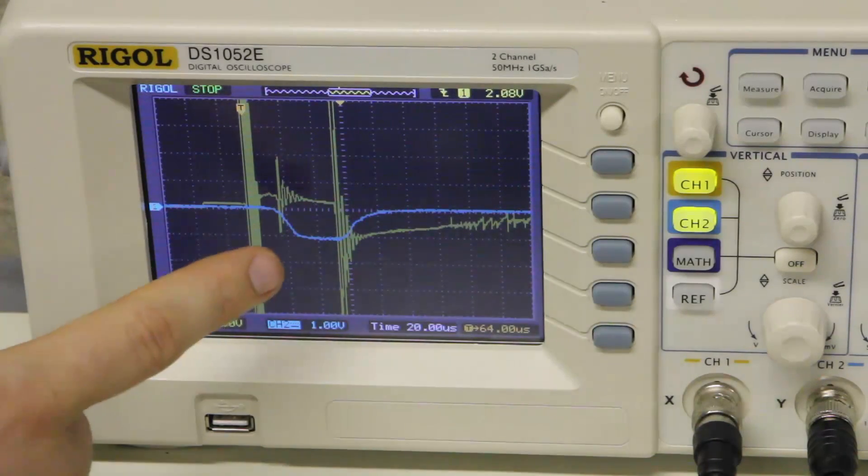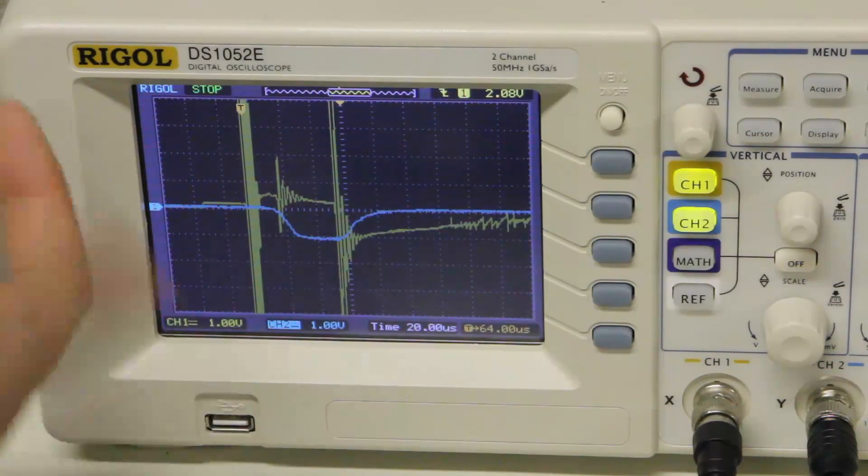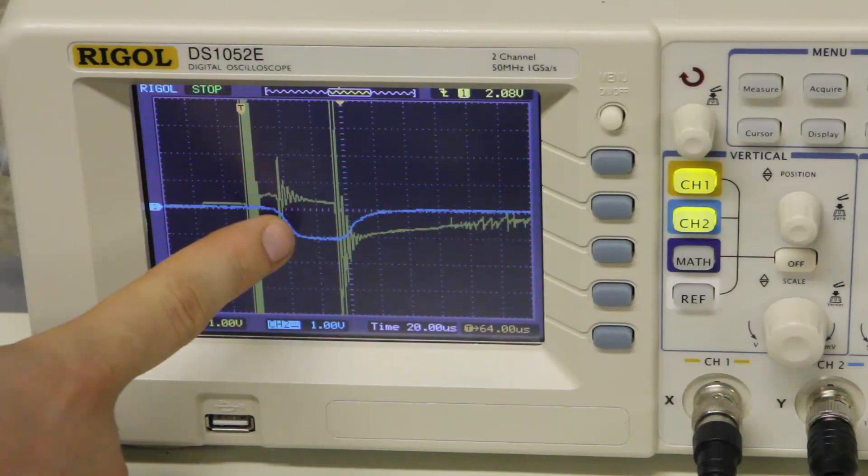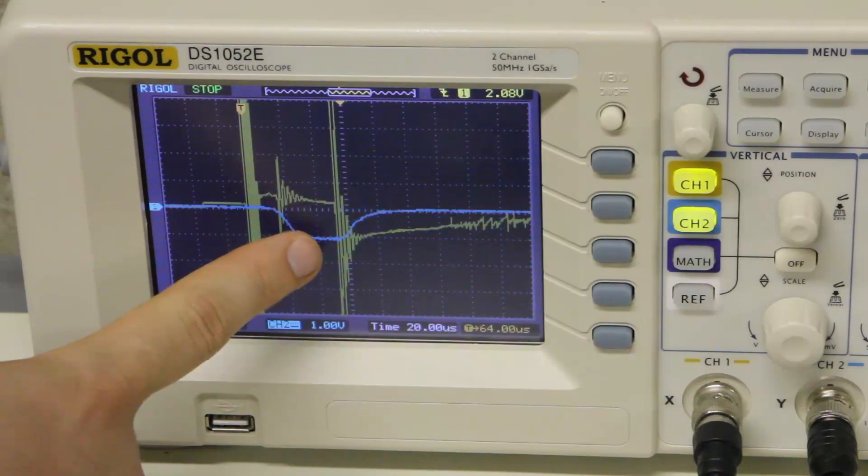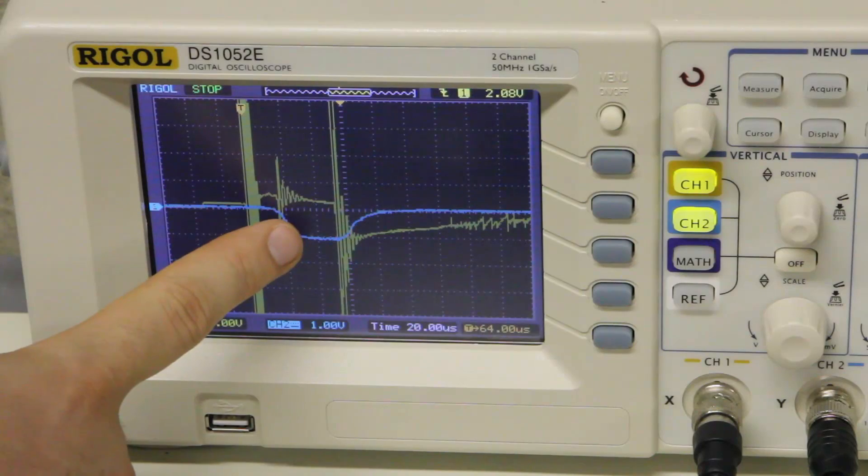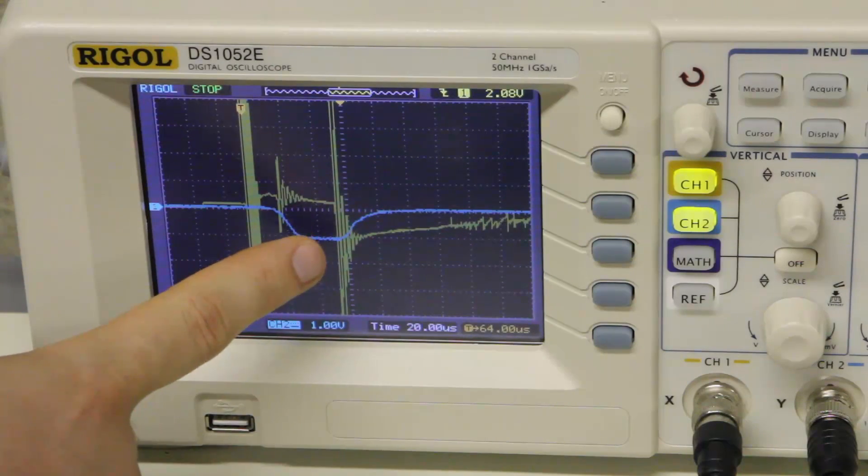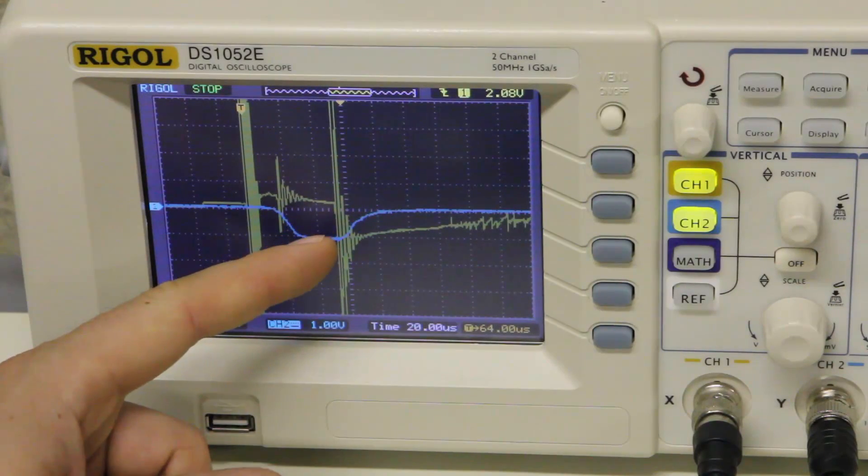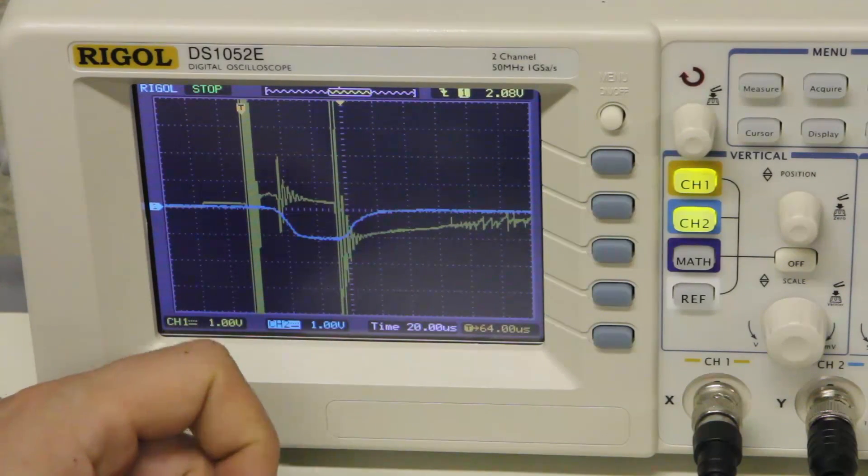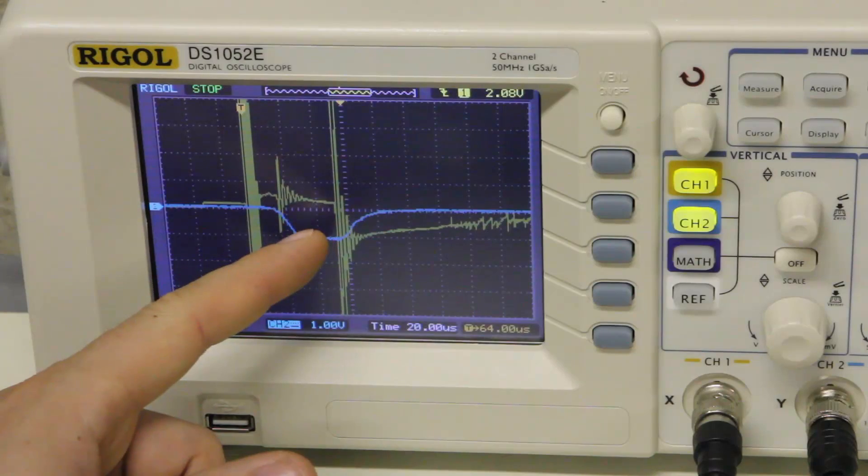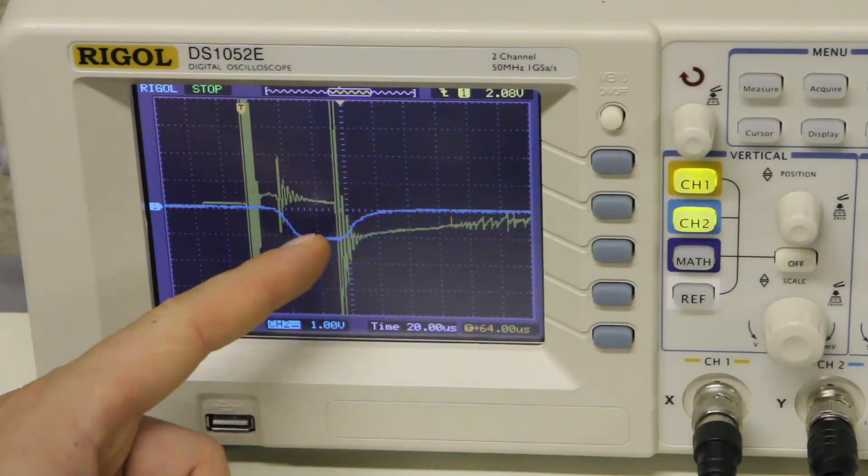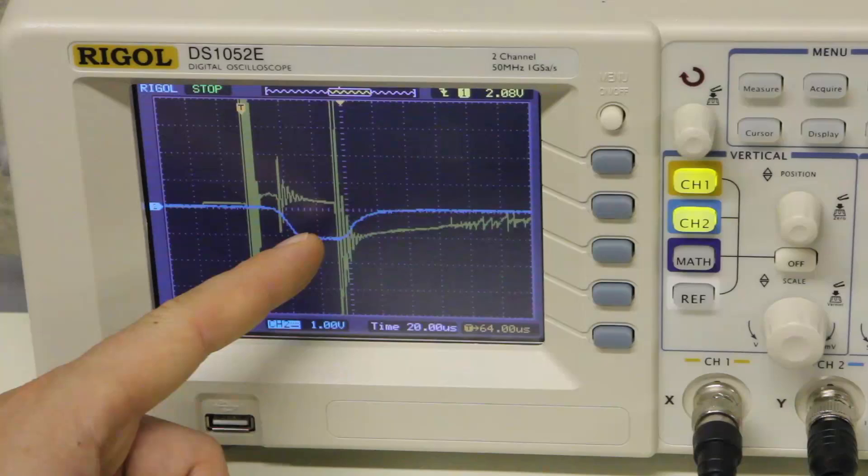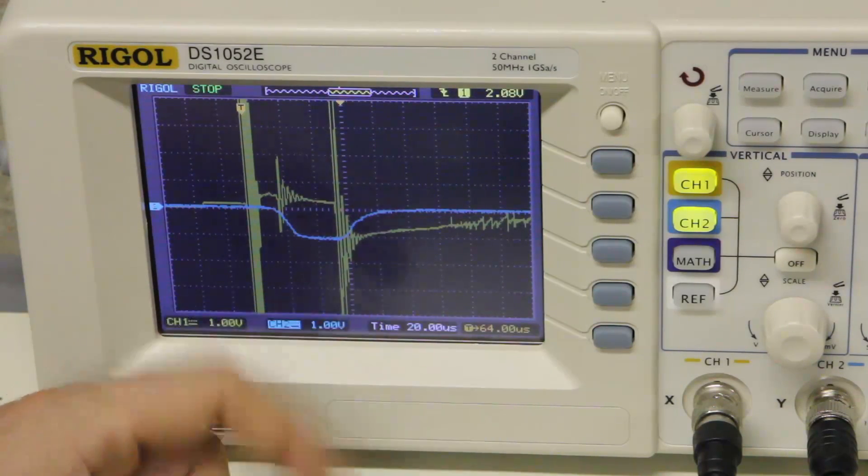One thing I'll point out is that we can't really use this light sensor as is with the camera axe because it has a negative voltage, which isn't going to work. You could put an inverter or a comparator using maybe an op amp to correct this negative voltage issue. But as is, while it's very good at measuring the flash duration on the scope, it would not be compatible with the camera axe.